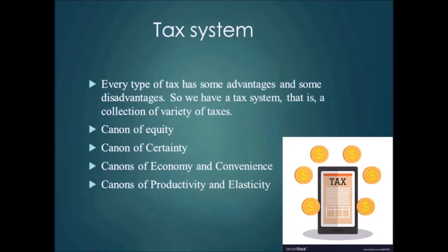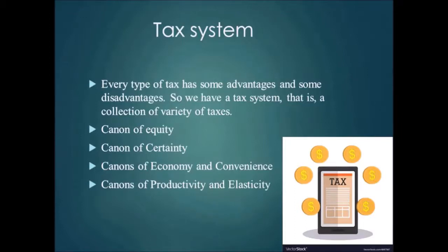The canon of economy and convenience states that if the tax is simple, the cost of collecting taxes — both taxpayer cost and tax collector cost — will be very low. Taxes should be collected from a person at the time they get enough money to pay. This canon implies that the cost of collecting a tax should be as minimal as possible; taxes that involve heavy administration costs and unusual delays in assessment should be avoided.